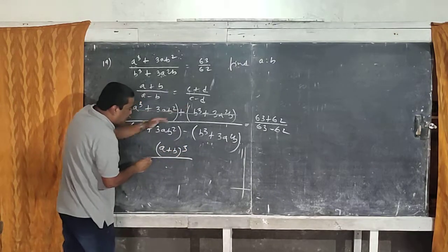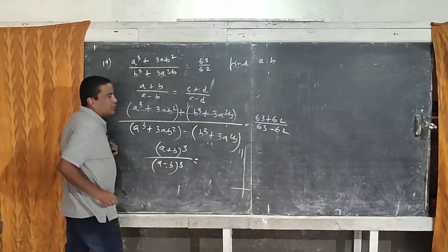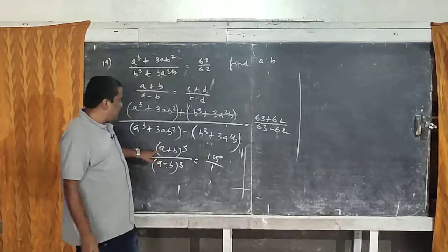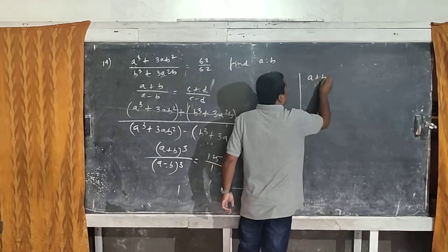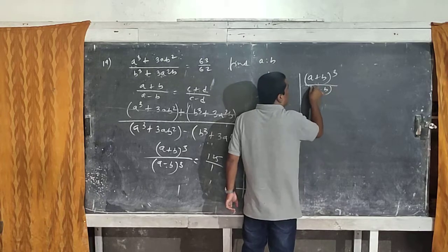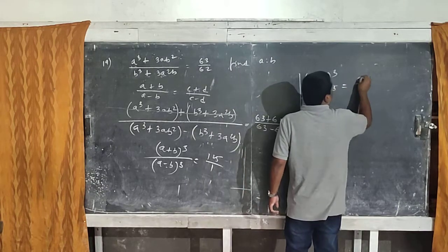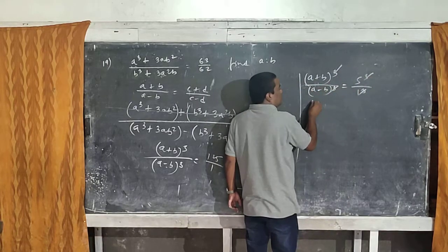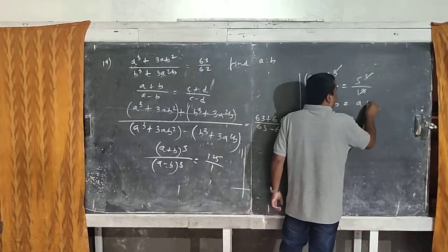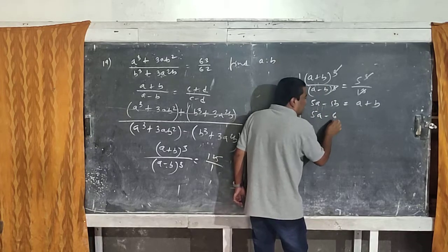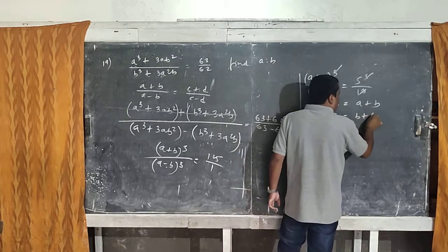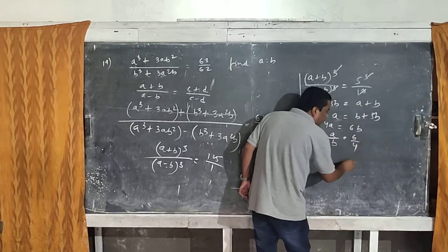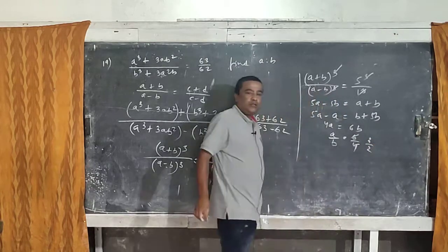If the numerator is (a+b)³, then the denominator is (a-b)³. So (a+b)³ / (a-b)³ = 125/1 = 5³/1³. These cancel, and you cross multiply: 5(a−b) = a+b, giving 5a−5b = a+b. Keeping like terms: 5a−a = b+5b, so 4a = 6b, meaning a/b = 6/4 = 3/2. That is the answer.